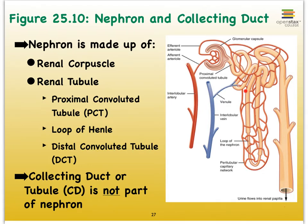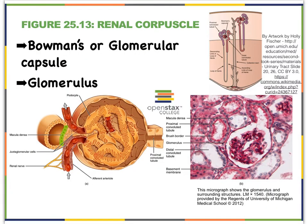The renal tubule is surrounded like a cobweb with a capillary bed we refer to as the peritubular capillaries. We're going to focus on the renal corpuscle for a bit. The nephrons in a kidney can sit either really close to the medulla or with the renal corpuscle and most of its tubules mostly present in the cortex. Regardless of which nephron we look at, they will always be made up of the same structures in their renal corpuscle.